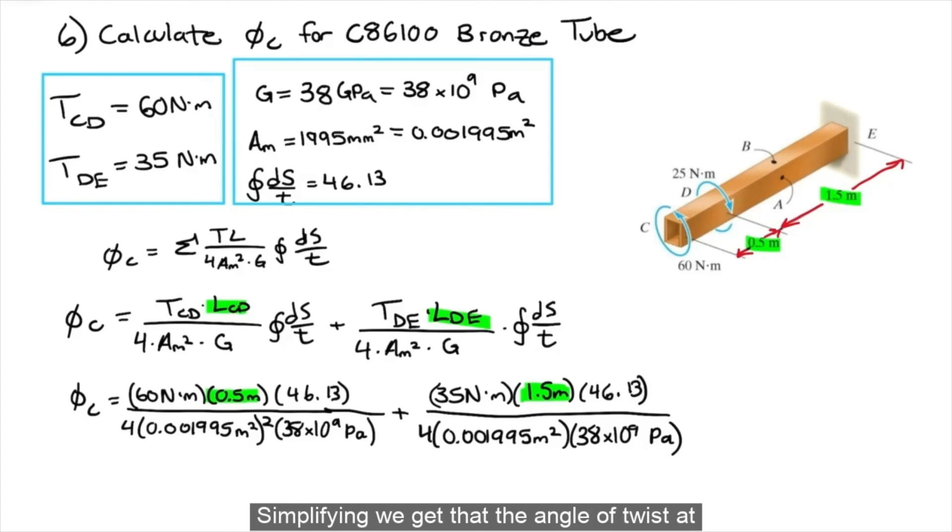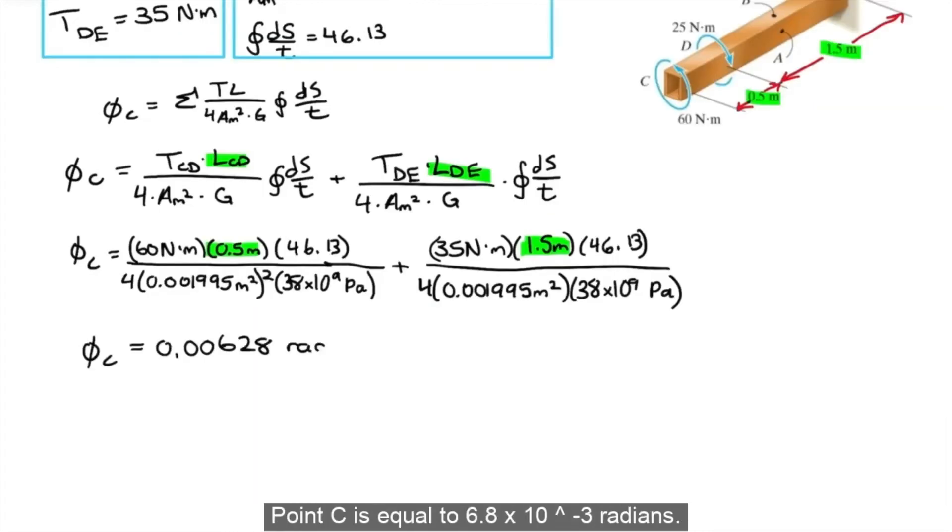Simplifying, we get that the angle of twist at point C is equal to 6.8 times 10 to the negative 3 radians.